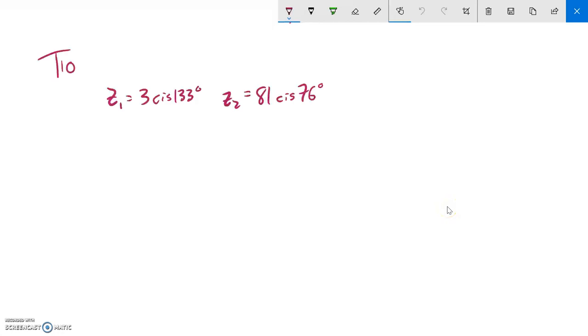This is Topic 10, and let's talk about doing arithmetic with complex numbers that are in cis form.